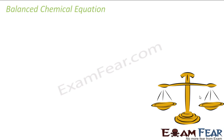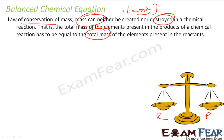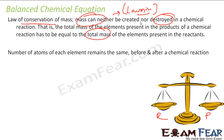For a balanced chemical reaction, the reactants and products must be balanced. The law of conservation of mass, given by Lavoisier, says that mass can neither be created nor destroyed in a chemical reaction. Thus, the total mass of elements in the products equals the total mass of elements in the reactants. So the number of atoms of each element remains the same before and after the chemical reaction.